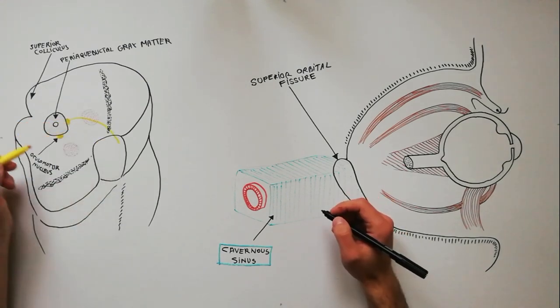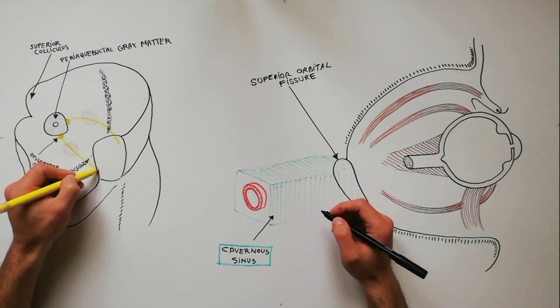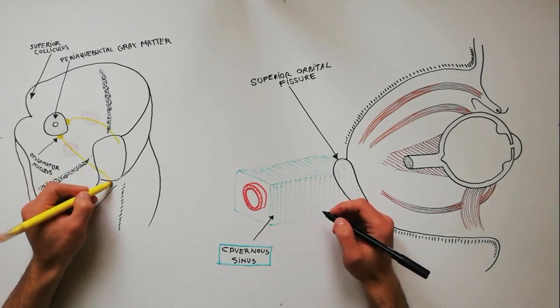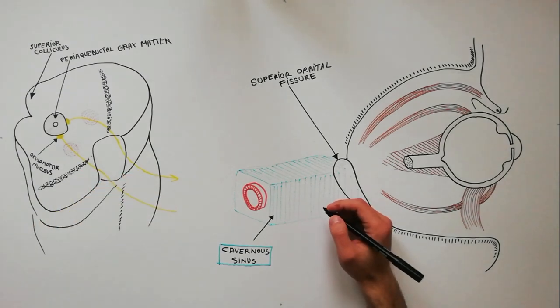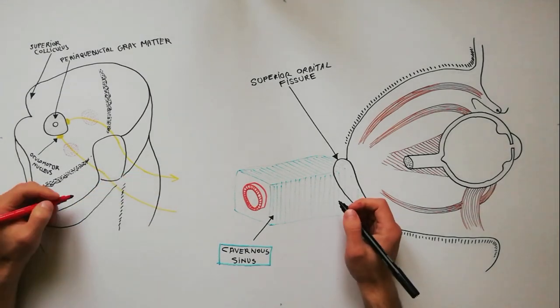Fibers from the oculomotor nucleus pass through the red nucleus, then pass through the medial part of the substantia nigra, exiting through the interpeduncular fossa.